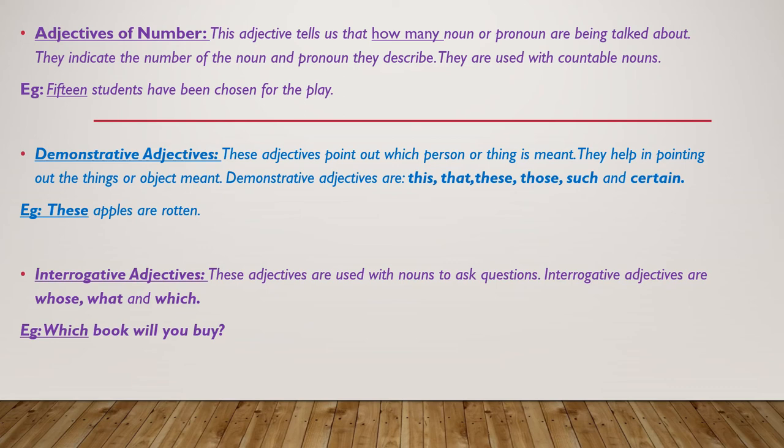Demonstrative adjectives: these adjectives point out which person or thing is meant. They help in pointing out the thing or object meant. Basically, the demonstrative adjectives are: this, that, these, those, such, and certain. For example: these apples are rotten.